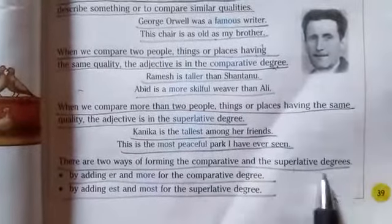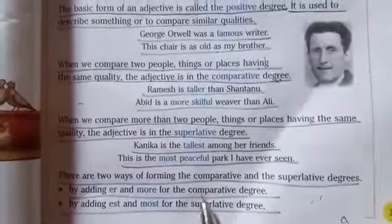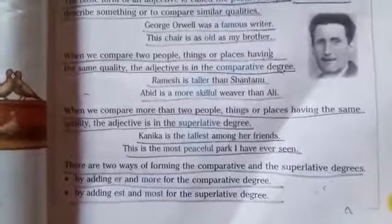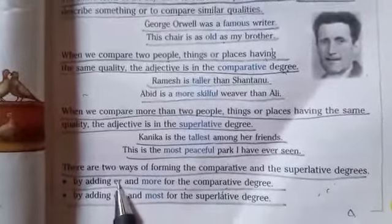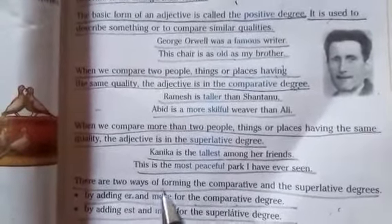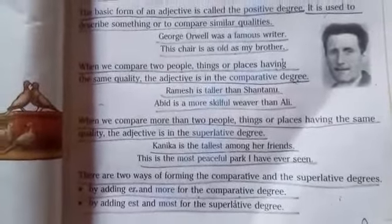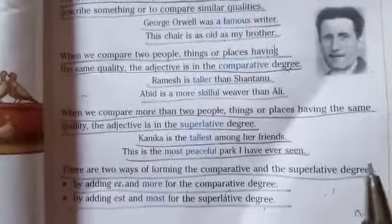There are two ways of forming the comparative and the superlative degrees. By adding ER and more for the comparative degree — comparative banane ke liye we use ER. We can also use 'more', for example: more beautiful, more intelligent, more skillful. So comparative degree examples: high, higher, highest; tall, taller, tallest. For superlative degree, we add EST and most — superlative degree banane ke liye we use EST and most.